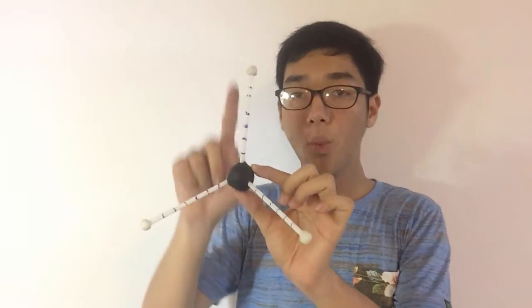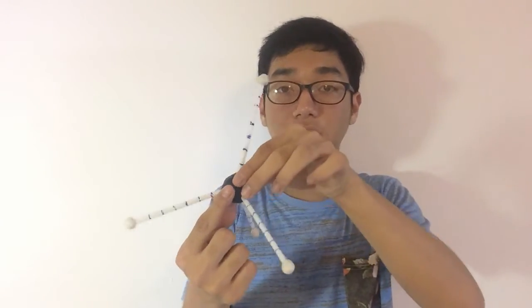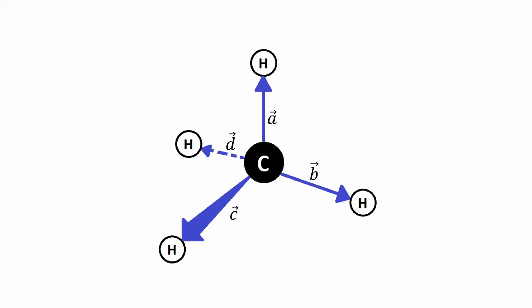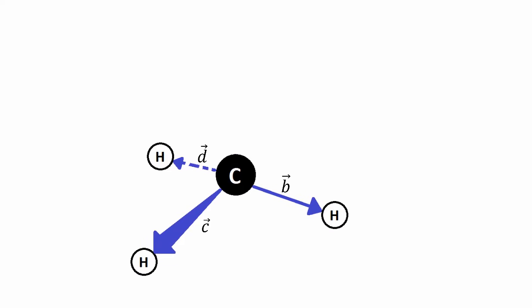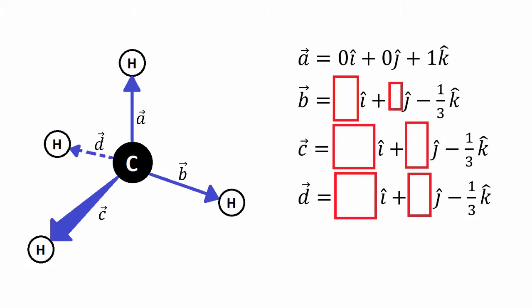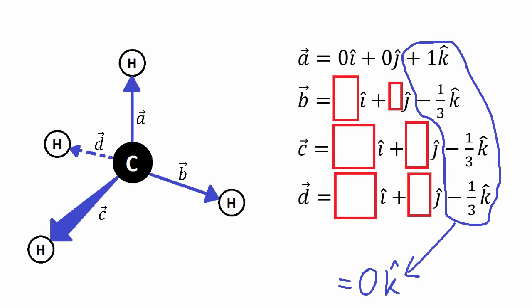Since that one vector goes upward with a z component of one, the other three vectors must together contribute a total z component of negative one going downward. By the geometry of a tetrahedral molecule, all three remaining vectors go down by the same amount, so each has a z component of negative one-third. The z components of all four vectors cancel out to zero, as required.